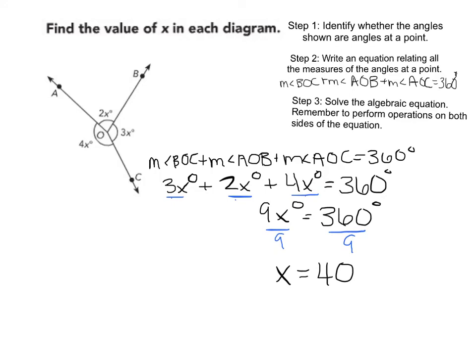Now let's check our work. So I'm going to put this in a different color. The measure of angle BOC would equal 3x, which is 3 times 40, which gives me 120 degrees. Measure of angle AOB equals 2x, which would be 2 times 40, which gives me 80 degrees.